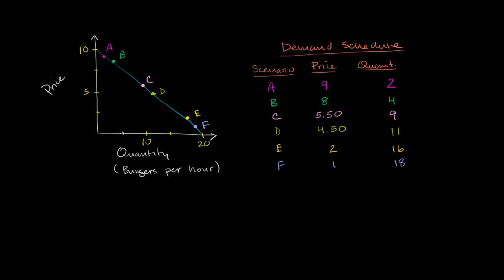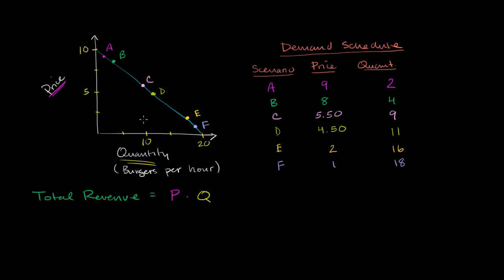We're going back to our little burger stand where we had our demand curve in terms of burgers per hour. I want to think about, at any given point on this demand curve, how much revenue would we get per hour? Total revenue, for simplicity, is how much total sales we get in a given hour. The total revenue is how much I get per burger times the number of burgers — price times quantity. If I sell 10 things at $5, I get $50 of revenue in that hour.